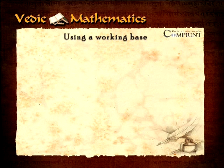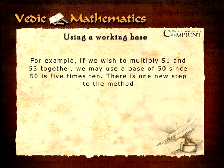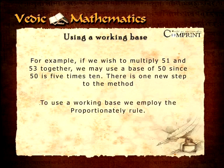Using a working base. Having used the all from 9 and the last from 10 rule in chapter 1 for multiplying numbers which are both close to a base of 10, 100, 1000, etc., we shall now go on to consider using the same method for working bases. A working base is a base which can be related to a power of 10 by ratio. For example, if we wish to multiply 51 and 53 together, we may use a base of 50 since 50 is 5 times 10. There is one new step to this method. To use a working base, we employ the proportionately rule.